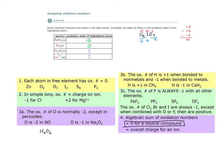Here we have another ionic compound: iron(III) oxide, Fe₂O₃. We want the oxidation number of the iron atom. Using the stock system, the Roman numeral in the name tells us the oxidation state of the iron atom — it's the three-plus oxidation state. So the answer here is +3.